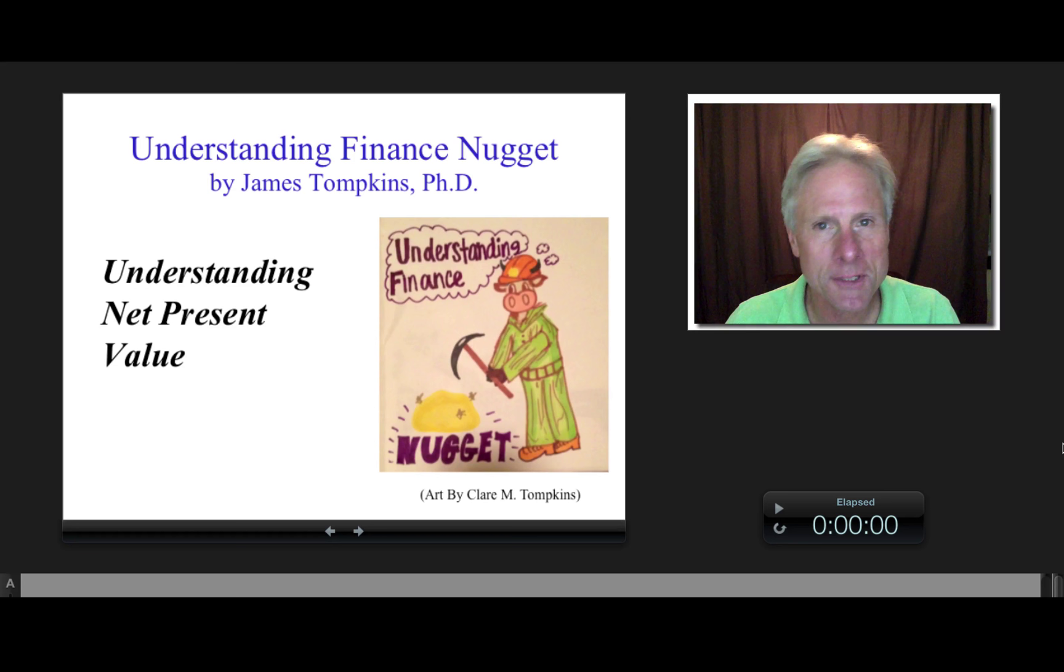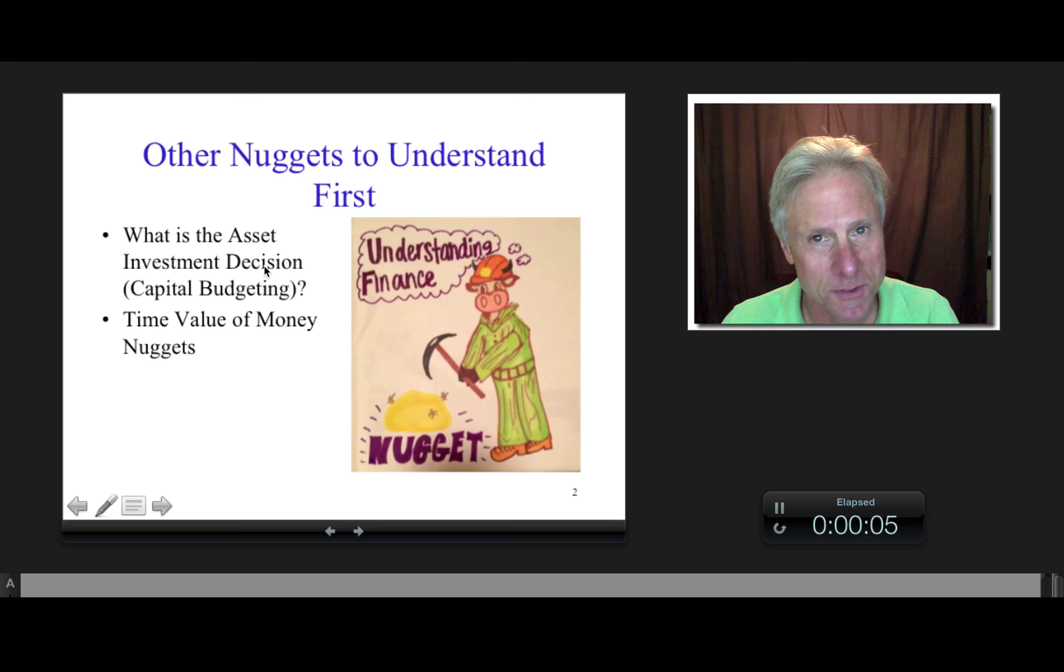So for example, if I tell you that the solution to a net present value problem is $10,000, well what exactly does that mean? And also, what are the strengths and weaknesses inherent in this analysis? Now before we get into this, it's going to be helpful for you to know what the asset investment decision is, because what does a net present value calculation typically apply to?